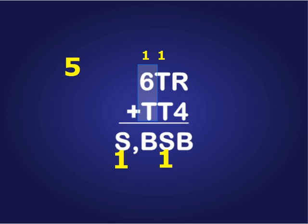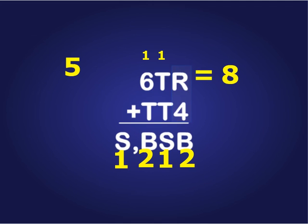And now we can solve it. Because if t is 5, that means b has to be a 2. And if b is a 2 in the hundreds column, it's got to be a 2 in the ones column. What can I add to 4 to get something that gives me 12? 8. r has to be 8. When you start at the left side and work your way back logically, you can solve these problems.